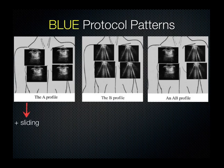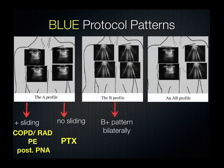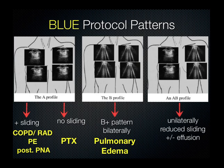Here are some examples. A predominant A profile with A lines on both sides and sliding turned out to be COPD, reactive airway disease, PE, or pneumonia in the posterior fields. Without sliding, pneumothorax was often the diagnosis. For a predominance of B lines bilaterally, the common outcome was pulmonary edema. An AB profile — where you have B lines on one side and A lines on the other, or unilateral predominance of one over the other with reduced sliding and an effusion — pointed to pneumonia.